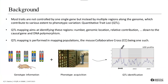Not all of you may be familiar with QTL mapping, so I will start with a little bit of background. Most traits or phenotypes like blood pressure or susceptibility to diseases are not controlled by one single gene, but instead by multiple regions along the genome, each contributing to some extent to phenotypic variation. These are called QTL, for quantitative trait loci. When we are interested in a given phenotype, we wish to identify these regions — finding where they are in the genome, how many there are, how much they contribute to phenotype, and so on — with the ultimate goal to go down to the causal gene and DNA polymorphism.